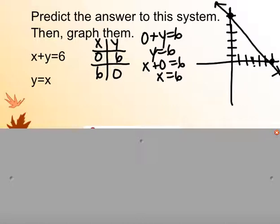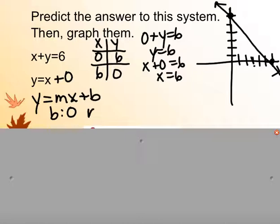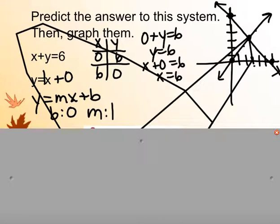For y equals x, this follows y equals mx plus b. We have plus 0, so the y-intercept is 0. The slope m is whatever is attached to x — which is 1. So with a y-intercept of 0 and slope of 1, I go up 1, over 1 repeatedly to get my second line. They intersect at over 3 and up 3.